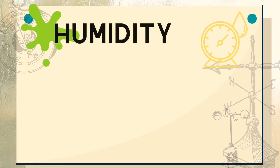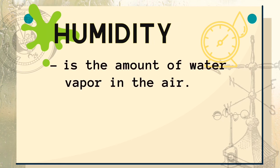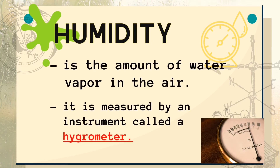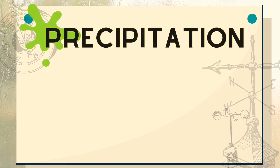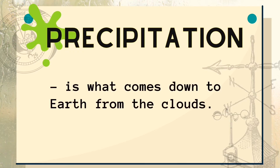Next is humidity. It is the amount of water vapor in the air, and it is measured by an instrument called a hygrometer. Warm air can hold more moisture than cool air. The last component is precipitation. It comes down to earth from the clouds, and the most common forms of precipitation are rain and snow.